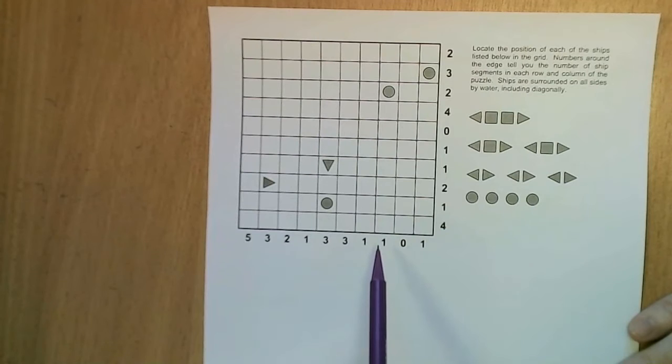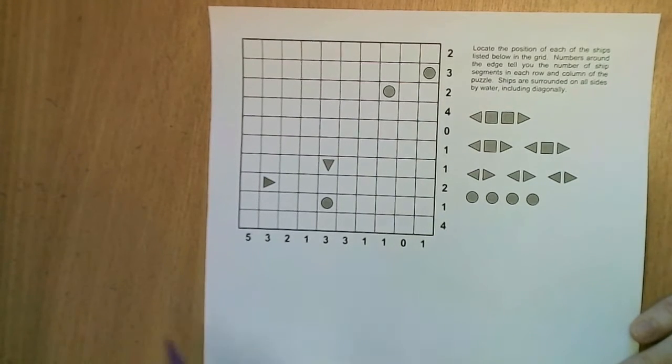And every ship when placed must be surrounded by water on all sides including diagonally, which we will go through and mark shortly with X's. Okay, so let's get started.